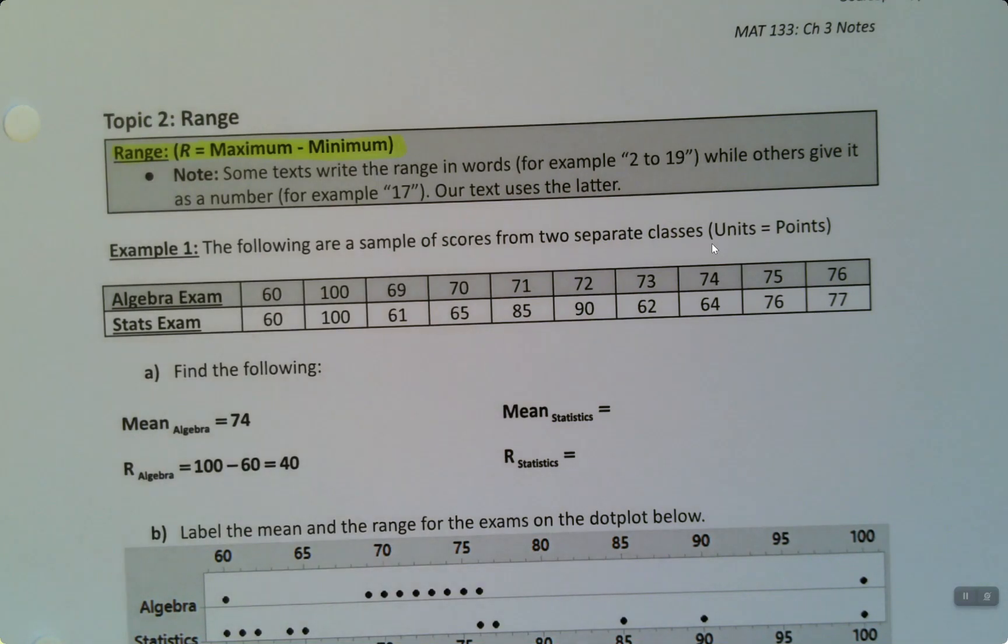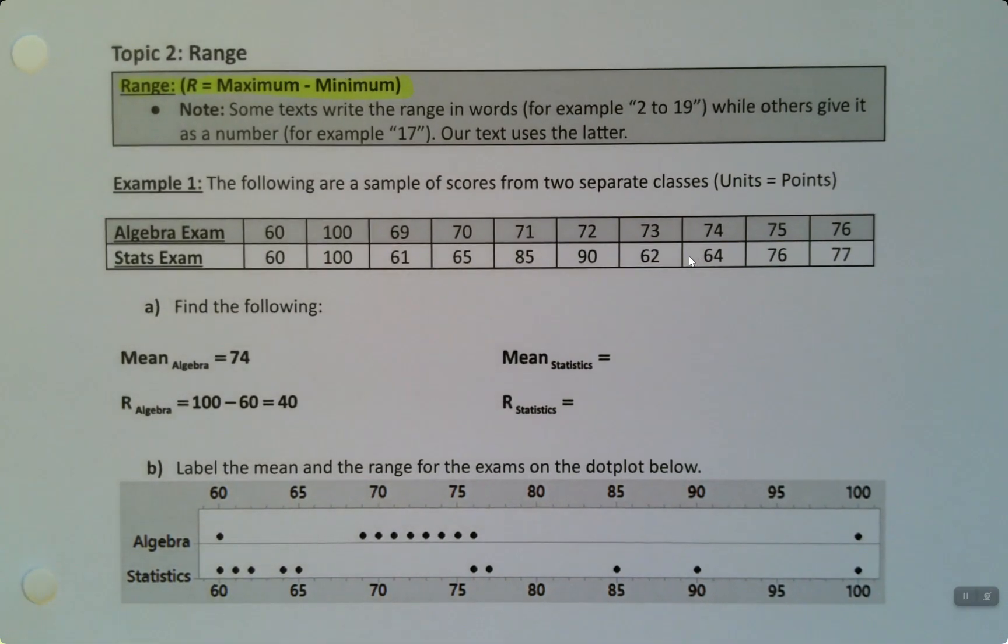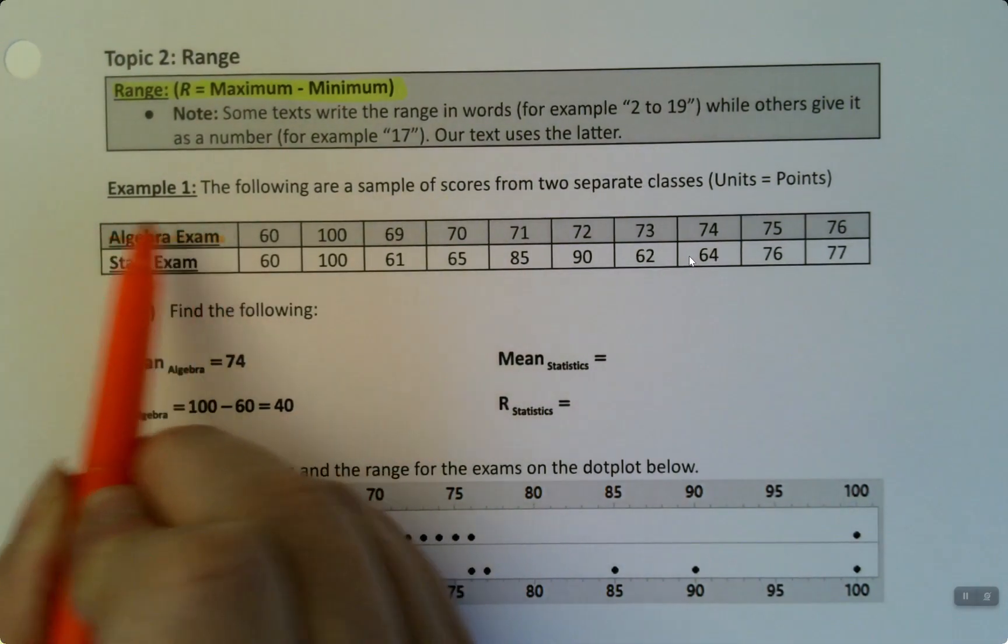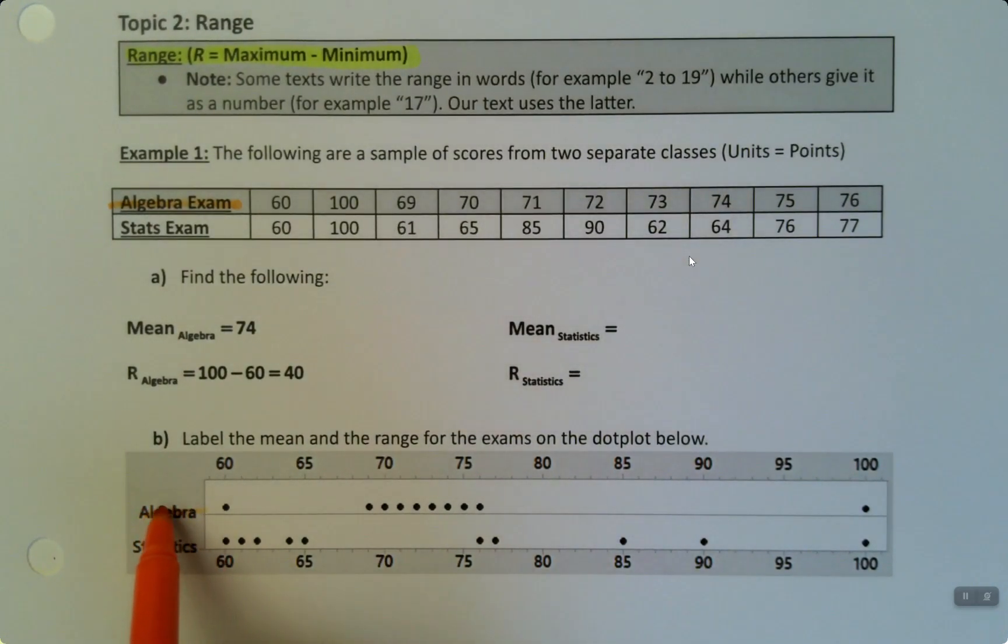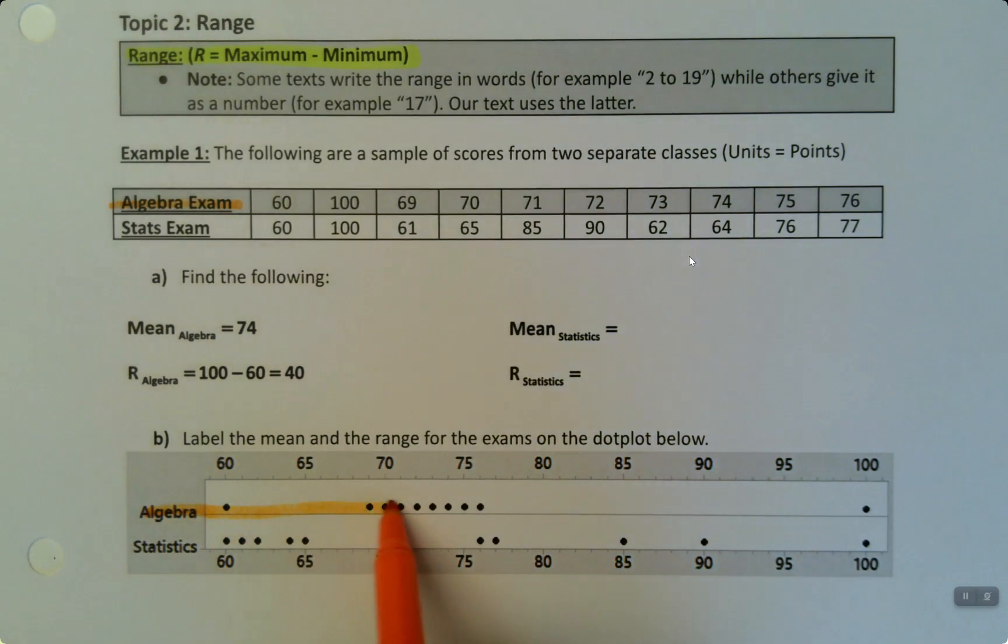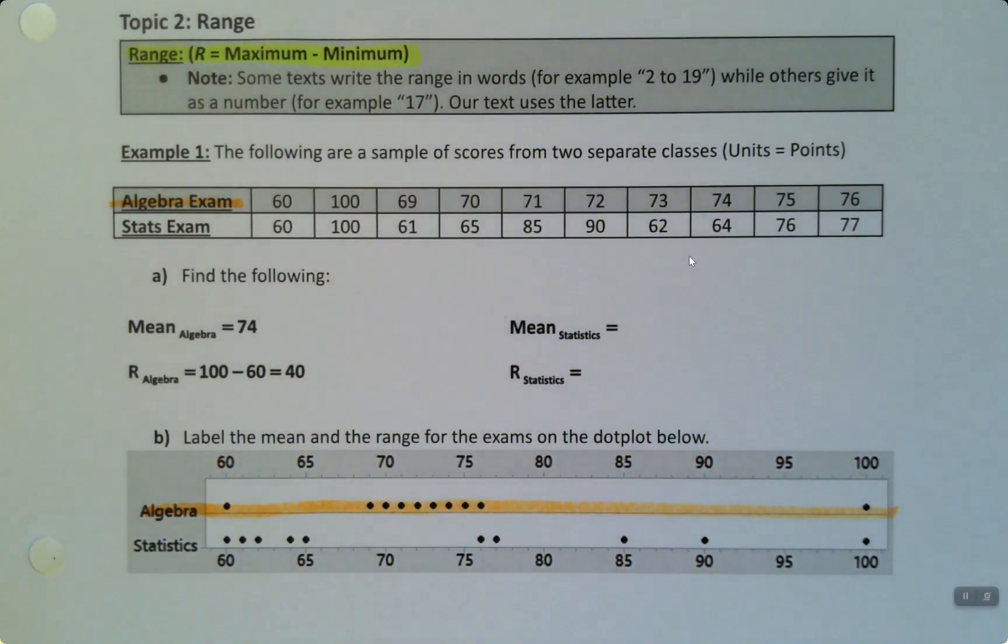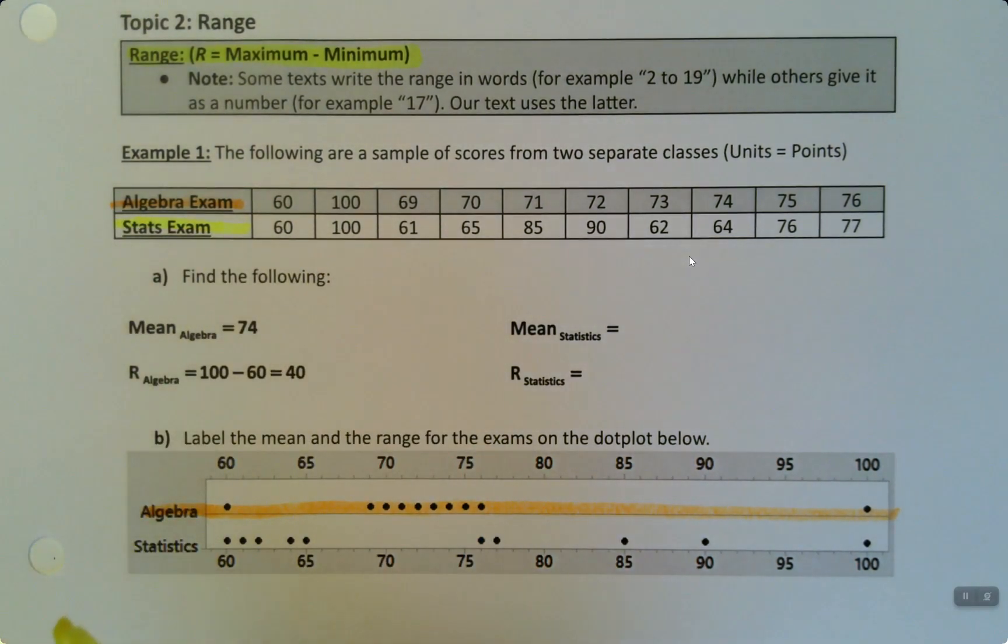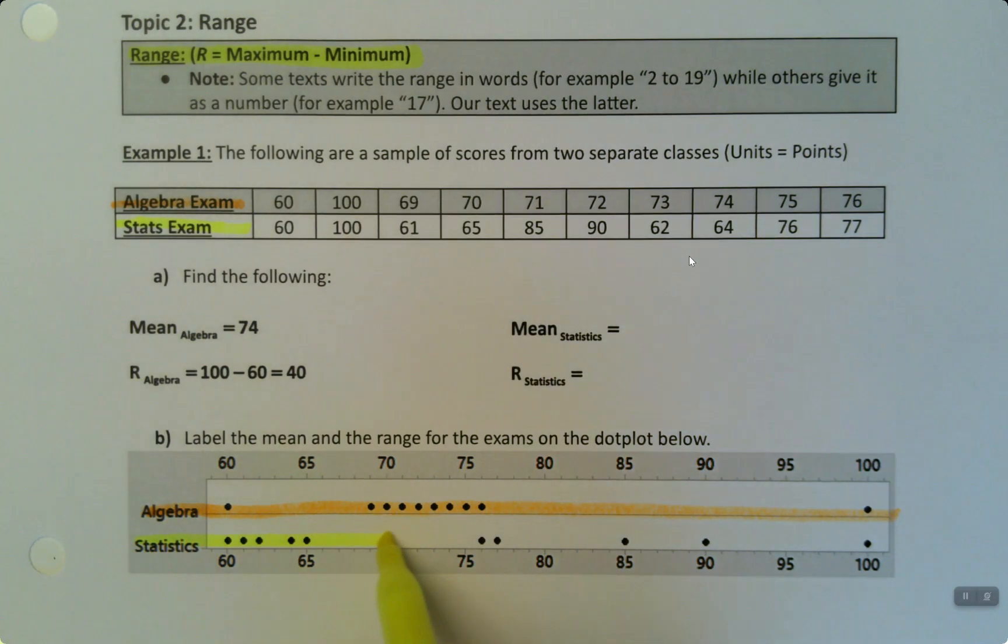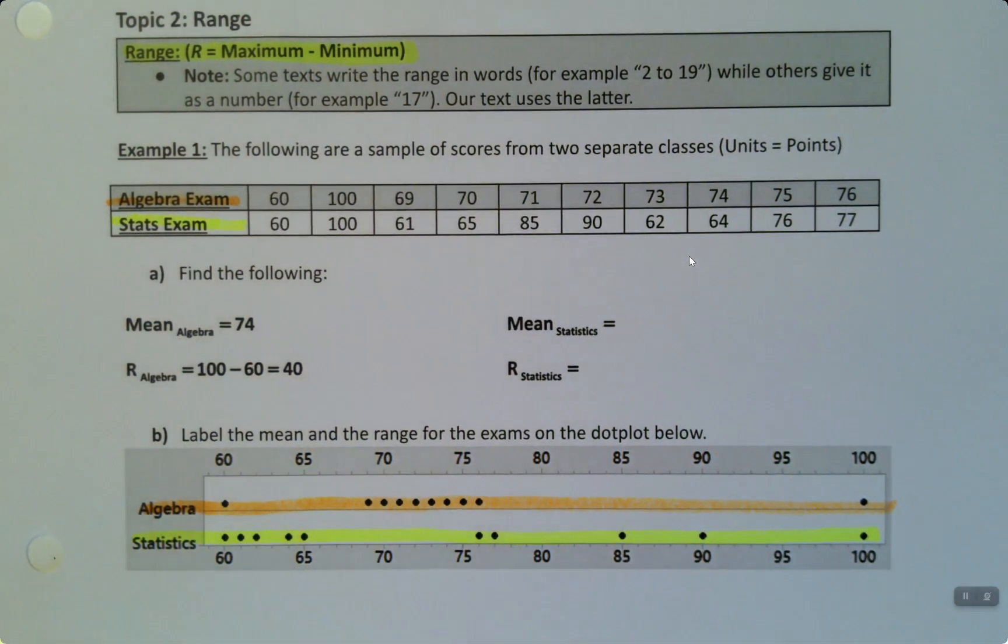All right, so we are going to find the mean and the range, capital R, for the following data sets. So we actually have two data sets here. We have an algebra exam and a stats exam. I'll highlight them so you can kind of see the difference. Okay, so the algebra exam is here, which down below, if you look at the dot plot, these are the values for the algebra exam. This is two dot plots at once. And then the stats exam, I'll do in yellow, is right here. There we have it.